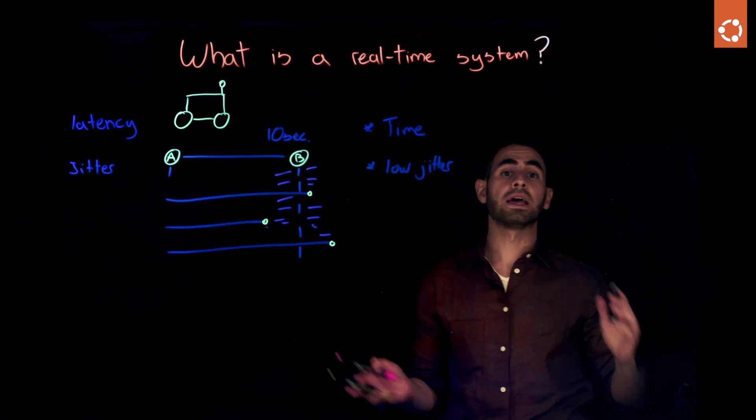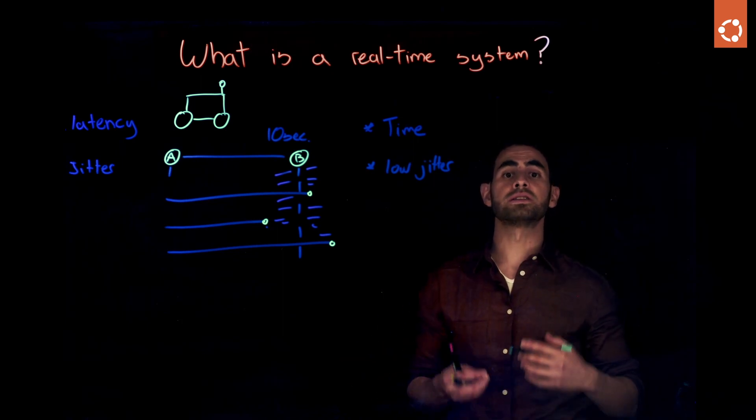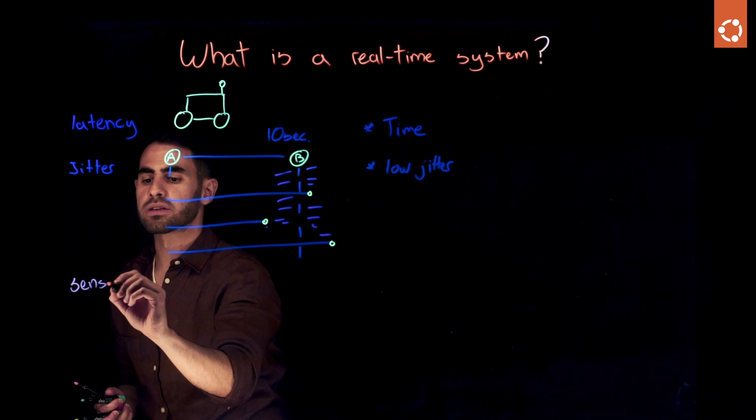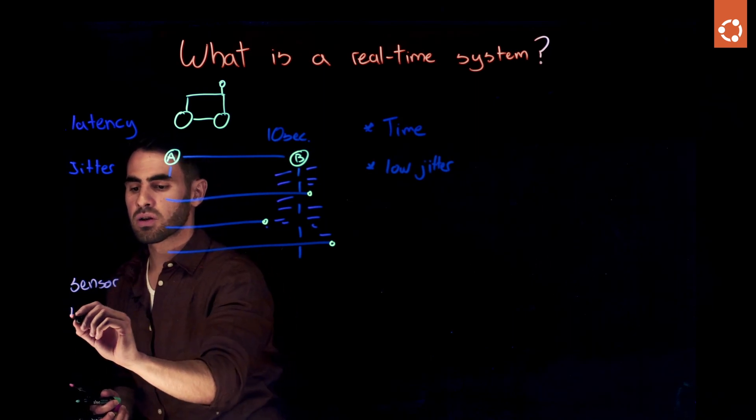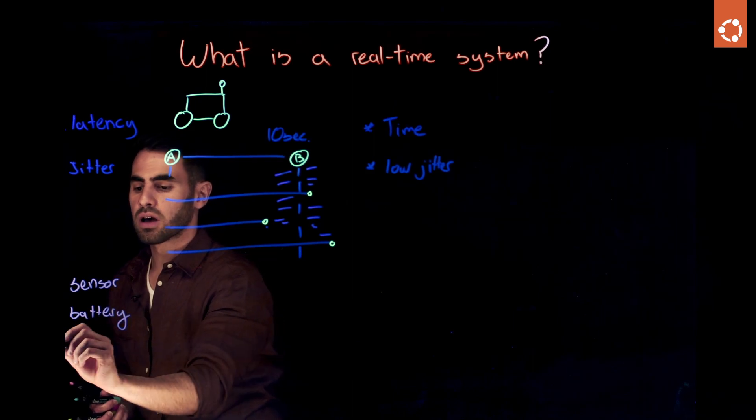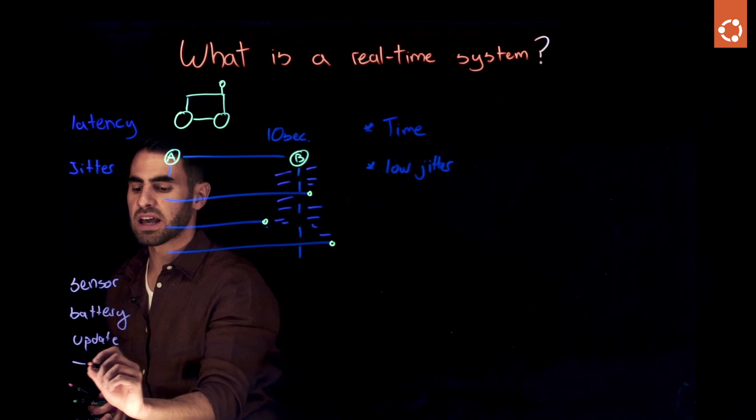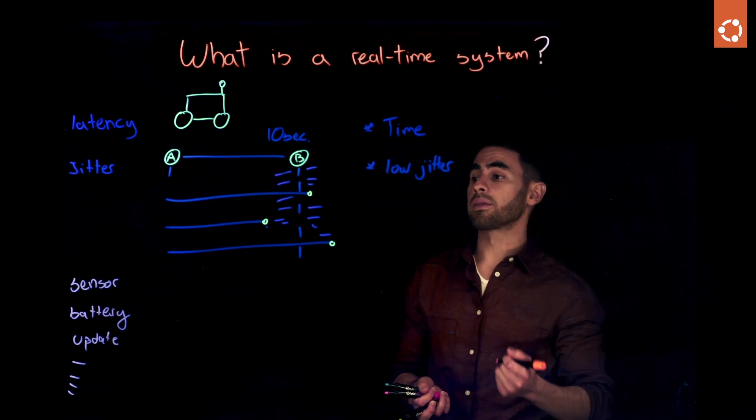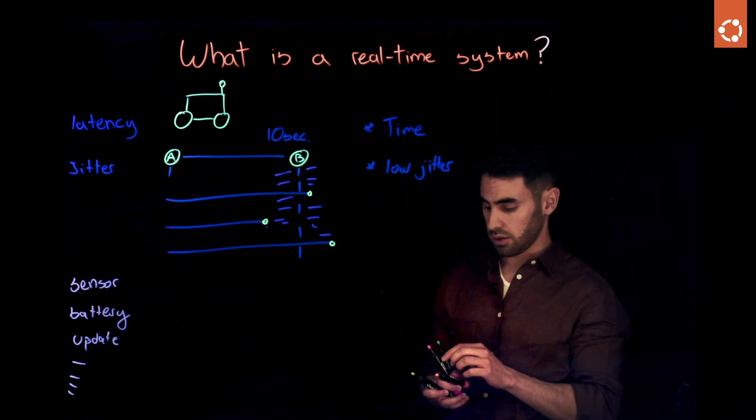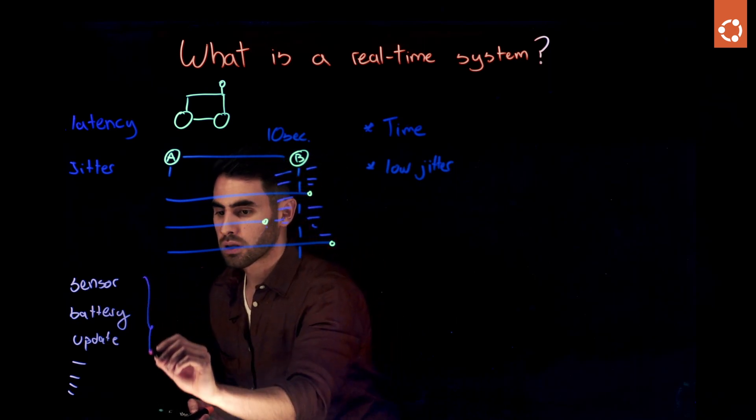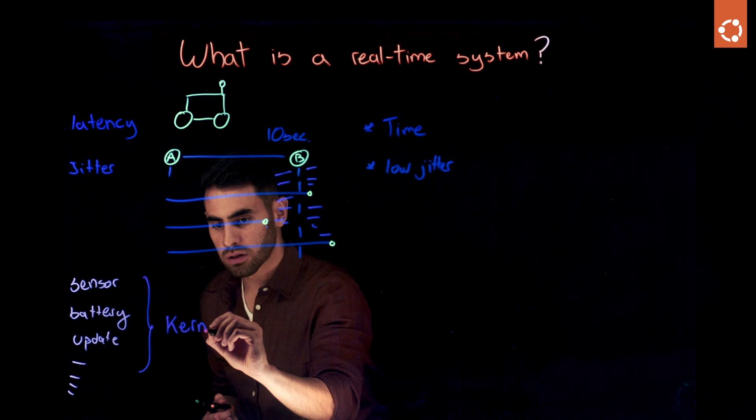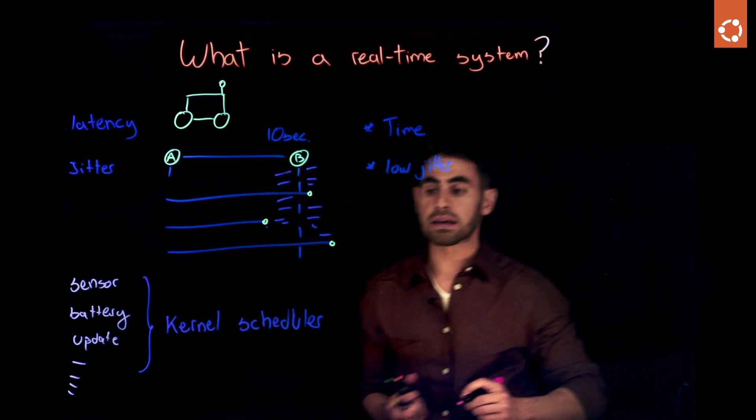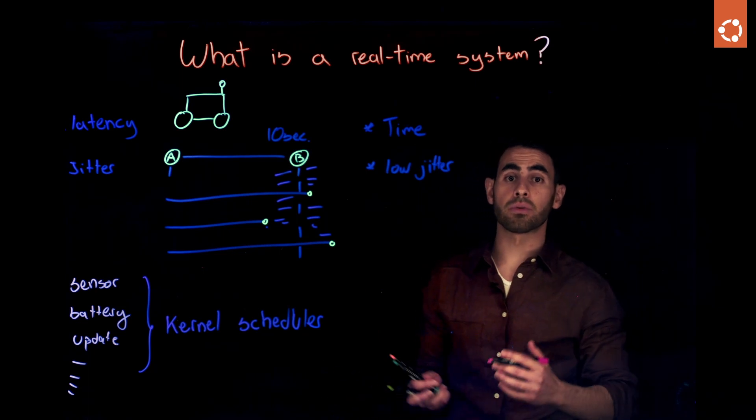Now, as with any other operating system, the robot is running several tasks at the same time. For example, let's say that it's getting some readings from its proximity sensor, some battery notifications, an update request, navigation, and so on. All of these activities, all of these processes, they consume machine resources. And in order to orchestrate this, we have inside the kernel, the scheduler. The scheduler is the one that is in charge of the orchestration of the processes of this machine.